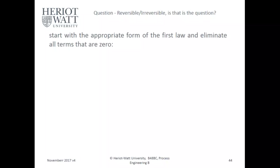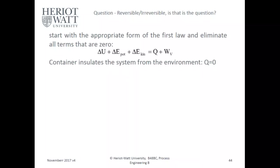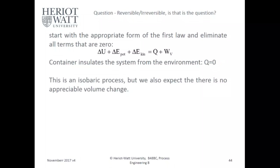Start with the appropriate form of the First Law and eliminate all the terms that are zero: delta U plus changing potential plus changing kinetic equals q plus volume work. The constant container insulates the system from the environment, so q equals zero.